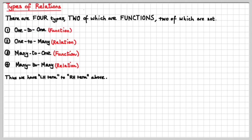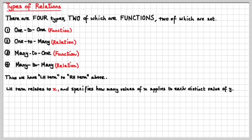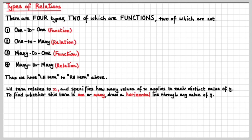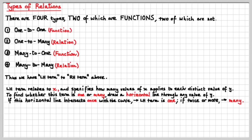Left-hand term, right-hand term. The left-hand term refers to the x and specifies how many values of x apply to each distinct value of y. You'll get this better as I show you examples. To find whether this term is a one or a many, we draw a horizontal line through any value of y. If this horizontal line intersects once with the curve, that means that the left-hand term is a one. If it intersects twice or more, then the left-hand term is a many.